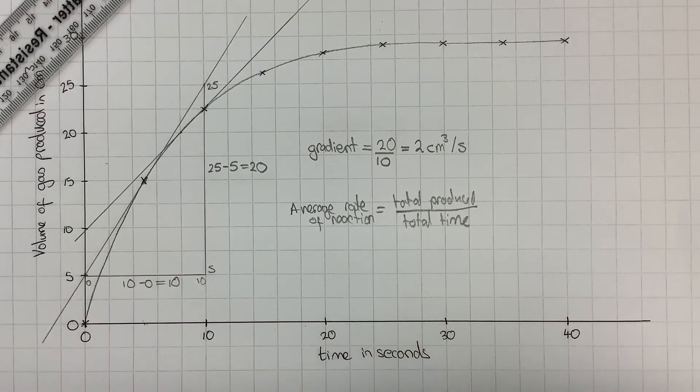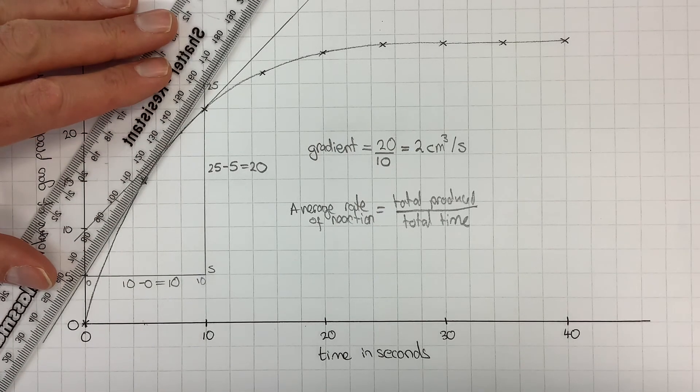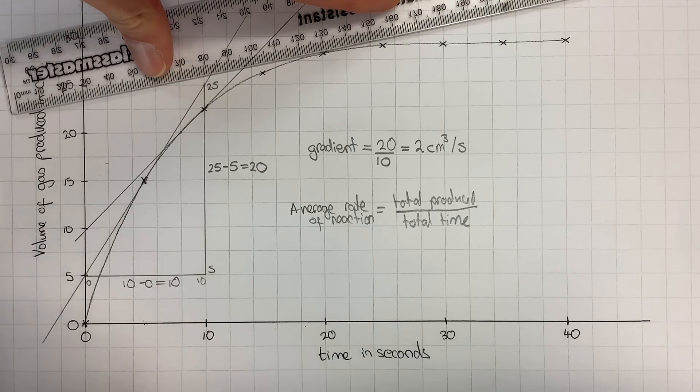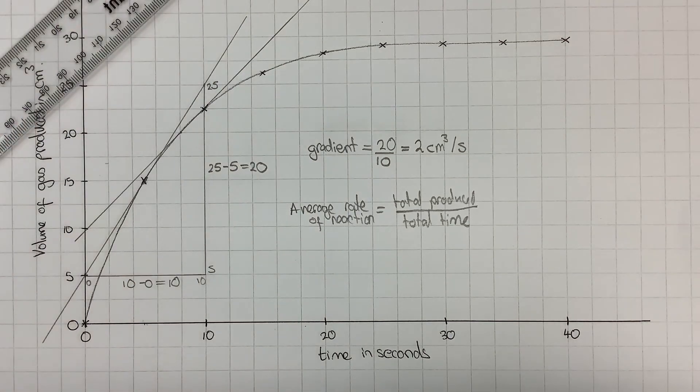The key thing to remember is if you want the instantaneous rate of reaction, you've got to draw in a tangent at the appropriate point. If you want the average rate of reaction, you would work that out by doing the total produced over the total time.